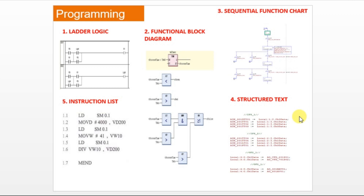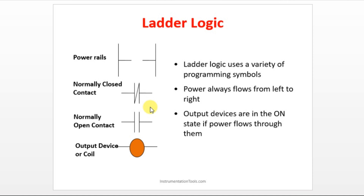There are five ways to write the PLC program. Whichever way is convenient for you, you can choose according to your requirement. In this course, we are going to see ladder logic. Let us see the basics of ladder logic. The name itself is telling — a ladder. It will be having two rails which are called as power rails. One is positive, another one is negative. The power always flows from left to right.